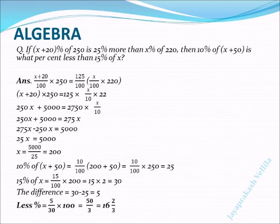So in the first part, x plus 20% of 250 is 25% more than x% of 220. This can be expressed as: x + (20/100) × 250 = (125/100) × (x/100) × 220.